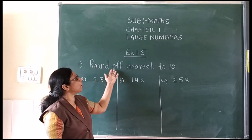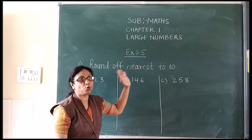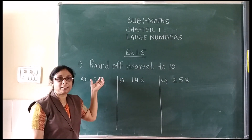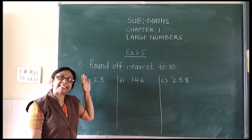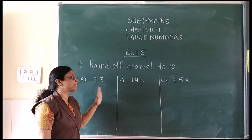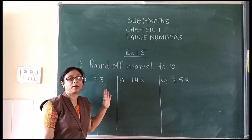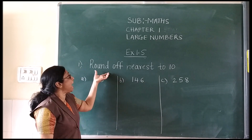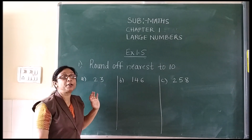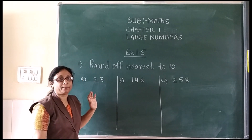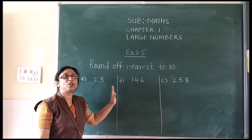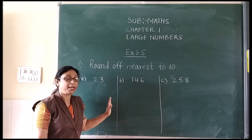Now we see question number 1 — round off. What does round off mean? Round off means it is not the exact number; it is an approximate number. This you must stay clear. Date, type — all these things you can't round off. So it is not an exact number, it is just an approximate number.